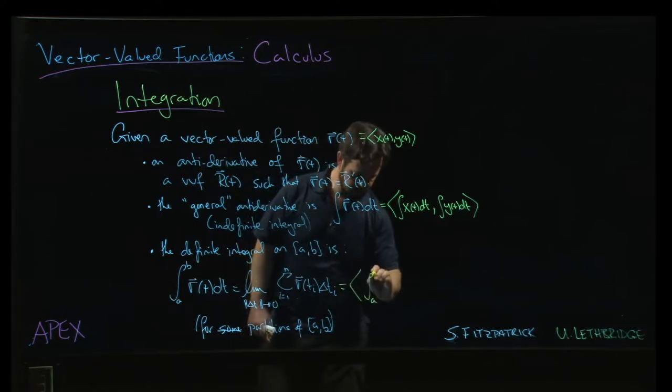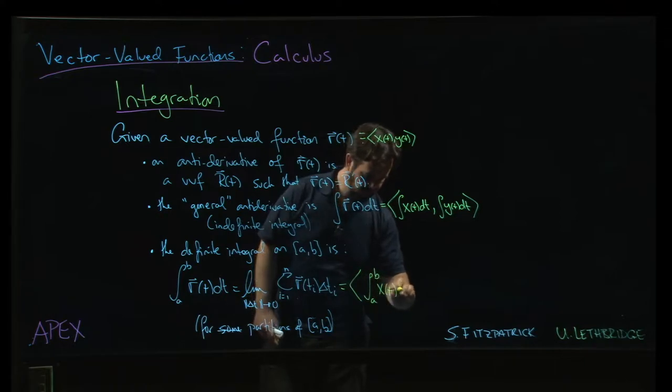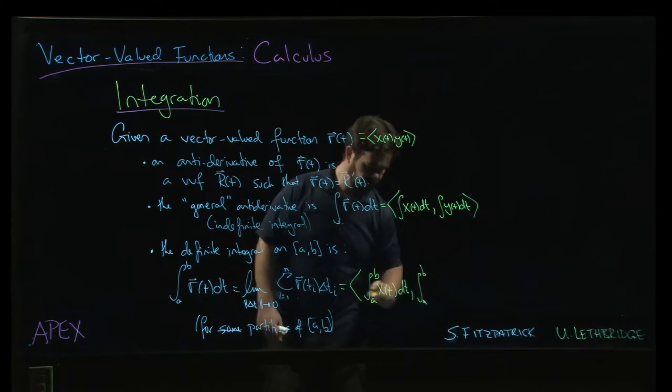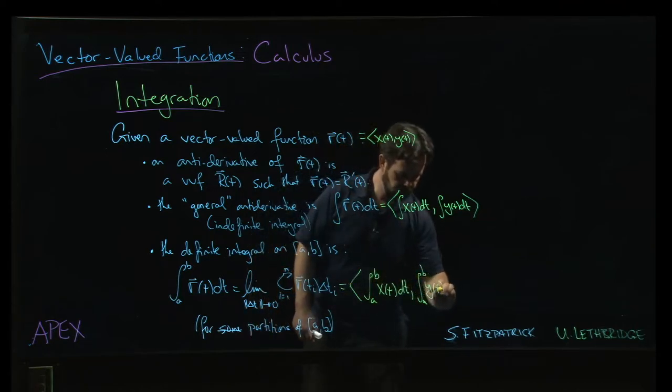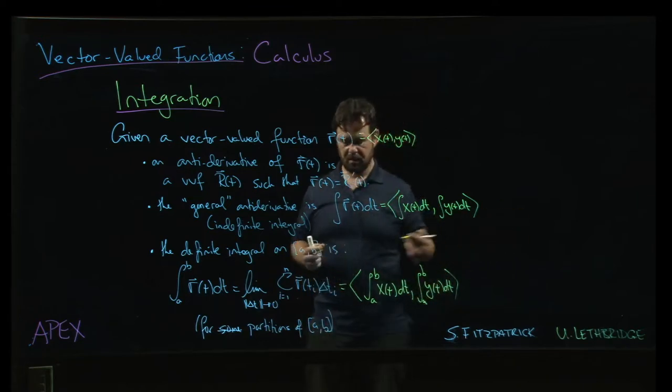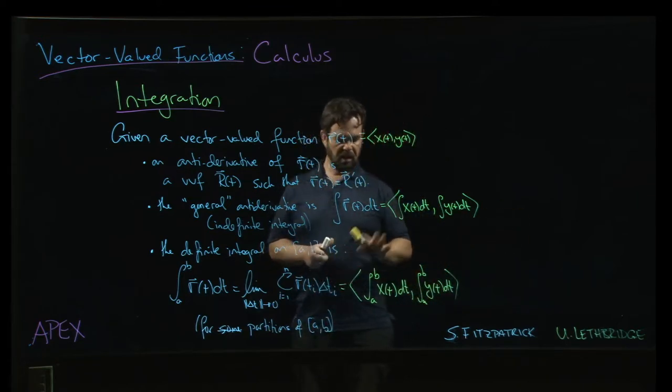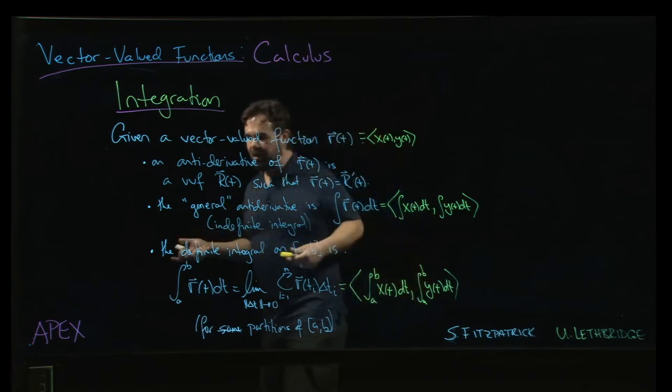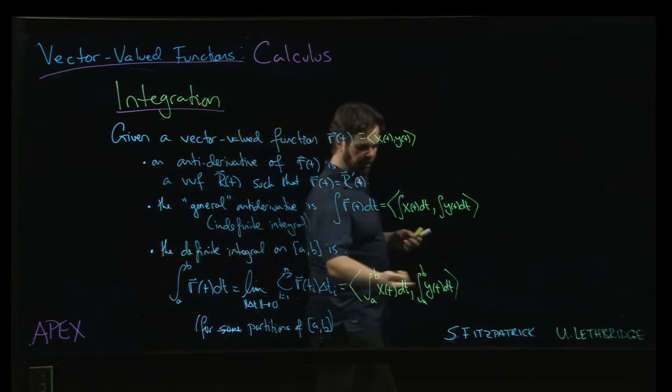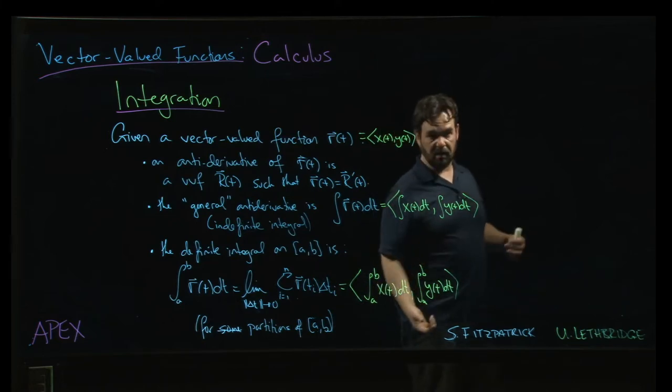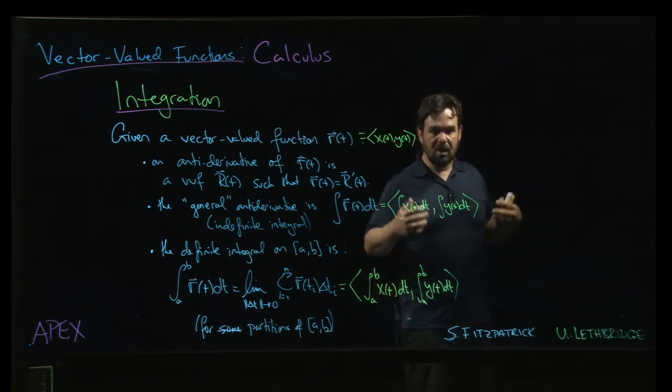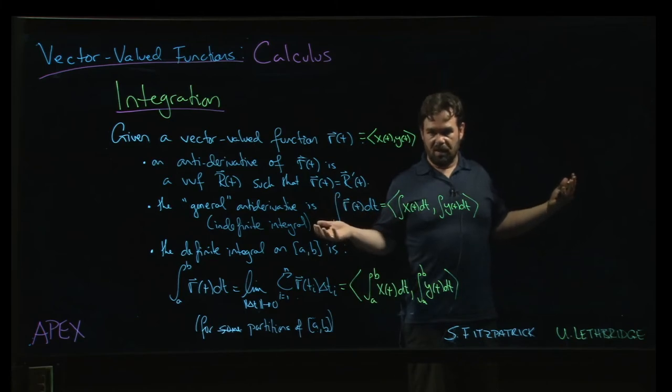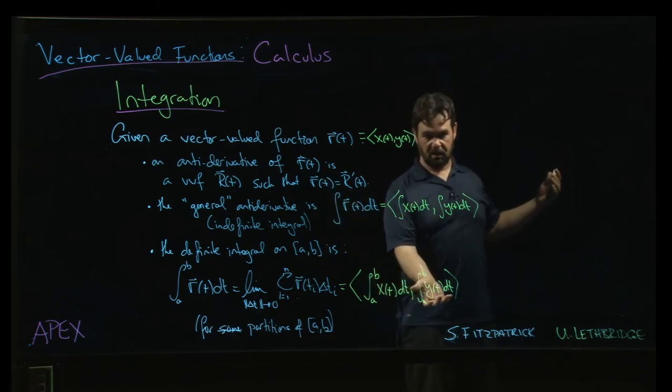And not surprisingly, this becomes the definite integral of x of t and then the definite integral of y of t. And if we were in three dimensions, maybe also throw in an integral for z of t, right? It's kind of exactly what you would expect. And then for those definite integrals, these are now just regular real-valued functions. And so if possible, you can apply the fundamental theorem of calculus, right? Use your usual integration techniques to handle each of those integrals.